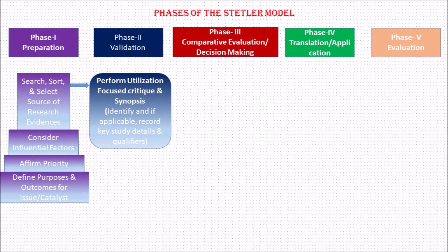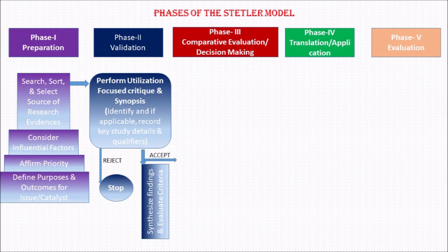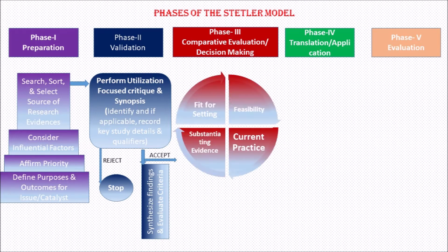In Phase 2 — Validation — you need to critically appraise the evidences you have found. If the evidences are really authentic, then proceed to the next step; otherwise, reject them. If you are going to accept the research findings, then synthesize the findings and outcome criteria, and then proceed to the next step.